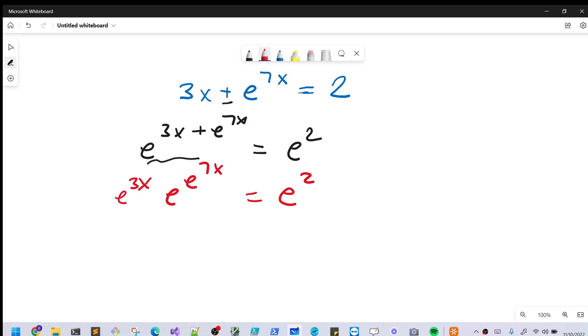And then what you'll notice is this is shaping up to be something where we can use the Lambert W function, or pretty close to it. What we need to do, though, is we need to have the same, we need these two values to be exactly the same. So I'm going to do, I need to fix this exponent here.